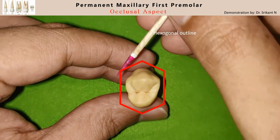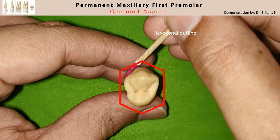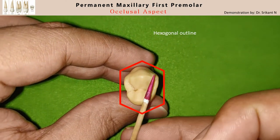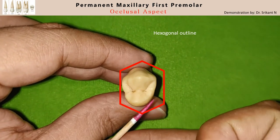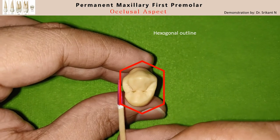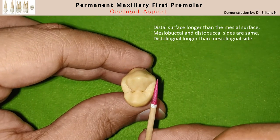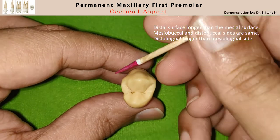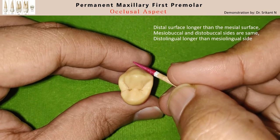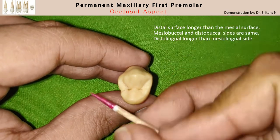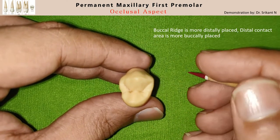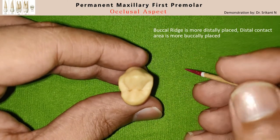It is a hexagon having a mesio-buccal slope, a disto-buccal slope, the distal outline, the distolingual, mesiolingual, and the mesial surface. The distal surface is longer than the mesial surface. The mesio-buccal and the disto-buccal surfaces are roughly the same. The distolingual seems to be longer than the mesiolingual surface.